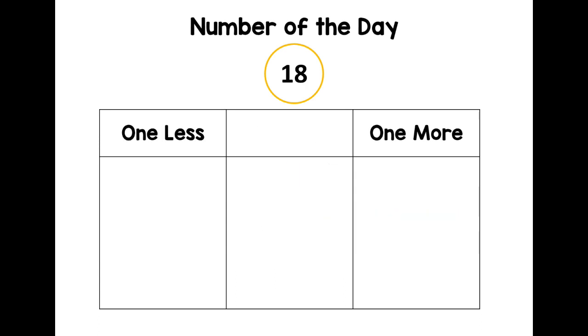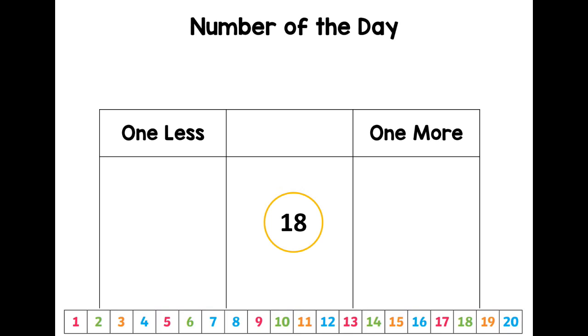We know numbers that are fewer and more, but what about one less and one more? Let's put 18 in the middle, and there's our number track. You find 18 on the number track to help you. You can jump down one less and up one more. Can you see it? Well done. I'm going to make the number track disappear now, so you're looking for the number that comes just before 18 and just after 18. Ready?